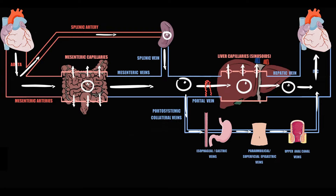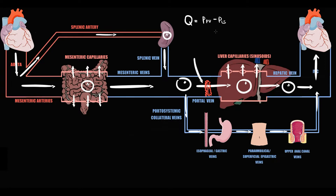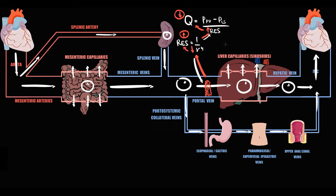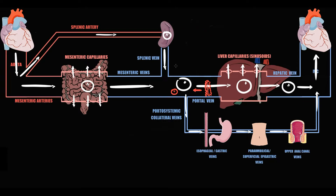Now suppose that thrombosis of the portal vein occurs. Flow through the portal vein to liver sinusoids decreases, because flow equals the pressure inside the portal vein minus pressure inside the liver sinusoids divided by resistance between them, and resistance is inversely proportional to the fourth power of radius. If thrombosis occurs, the radius inside the portal vein decreases. With decreasing radius, resistance increases and flow decreases. The inflow of blood to the portal vein remains the same while outflow decreases due to thrombosis. This results in accumulation of fluid proximal to the thrombosis, and increasing volume of fluid causes increasing hydrostatic pressure. This increase in portal venous pressure is called portal hypertension.